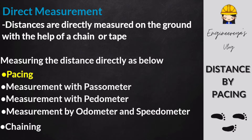Measurements of distance by pacing are chiefly confined to preliminary surveys and exploration where a surveyor is called upon to do a rough survey as quickly as possible. The method consists of counting the number of paces between two points of a line. A passometer is an instrument shaped like a watch, carried either in the pocket or attached to one leg. A pedometer is a device similar to the passometer except that it is adjusted to the length of the pace of the person carrying it — it registers the total distance covered. The odometer is an instrument for registering the number of revolutions of a wheel; the well-known speedometer works on this principle. Chaining is used to denote measuring distance with a chain or tape and is the most accurate method of making direct measurements.